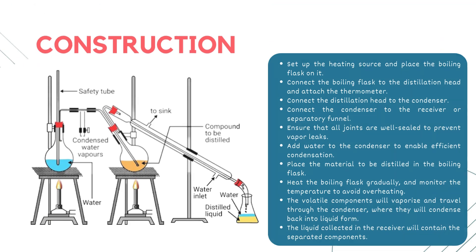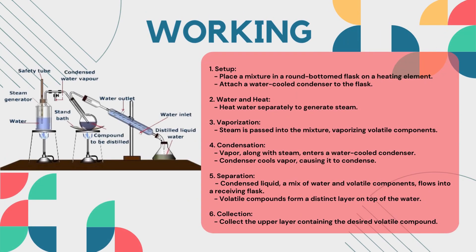Now we will discuss the working of steam distillation. A round-bottomed flask containing the mixture to be distilled is placed on the heating element, then a water-cooled condenser is attached to the flask, and a receiving flask is positioned at the other end of the condenser. Water is heated in a separate container and steam is generated. The steam is then passed into the mixture in the round-bottomed flask, heating the mixture and causing the volatile components to vaporize by providing them energy. The vapor consists of the desired volatile components along with the steam.